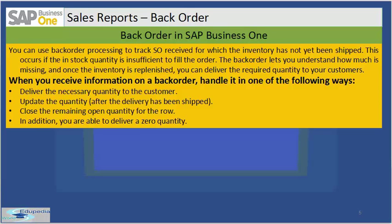You can use backorder processing to track customer sales orders received for which the inventory has not yet been shipped. Normally this occurs when the available quantity is insufficient to fill the order. The backorder process lets you check how much is missing, and once the inventory is replenished you can ship the required quantity to your customer. When you receive information on a backorder, you can handle it by choosing one of the following ways.